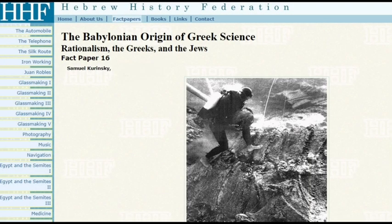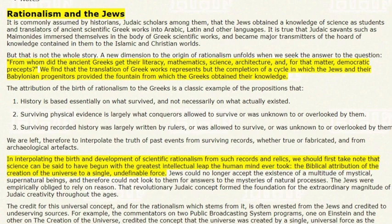The Babylonian origin of Greek science: rationalism, the Greeks and the Jews. From whom did the ancient Greeks get their literacy, mathematics, science, architecture, and democratic precepts? We find that the translation of Greek works represents but the completion of a cycle in which the Jews and their Babylonian progenitors provided the fountain from which the Greeks obtained their knowledge.